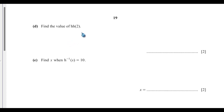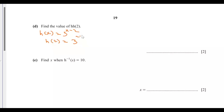For question 9d, find the value of h(h(2)). We know h(x) equals 3 to the power of x minus 2. So h(2) equals 3 to the power of 2 minus 2, which is 3 to the power of 0, which equals 1. So h(h(2)) is the same as h(1).